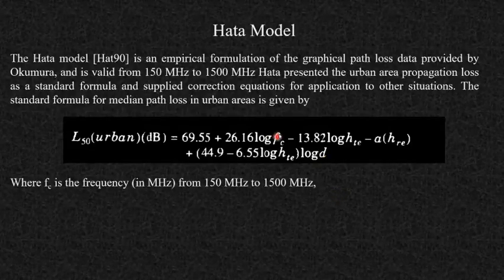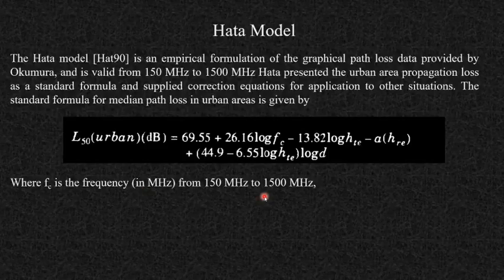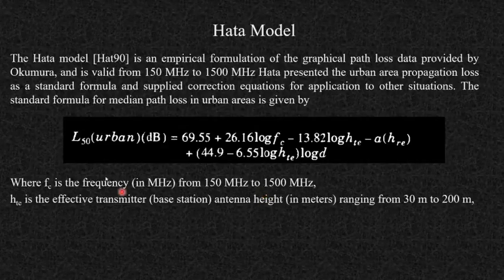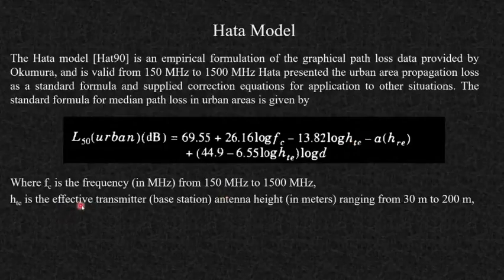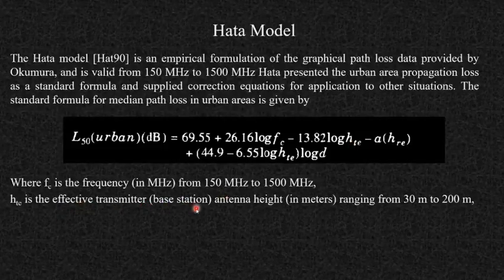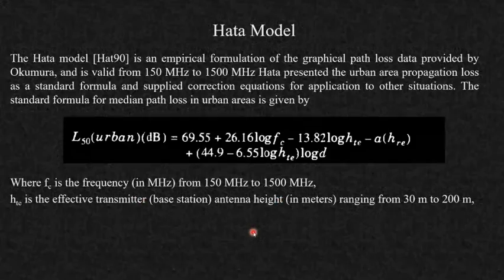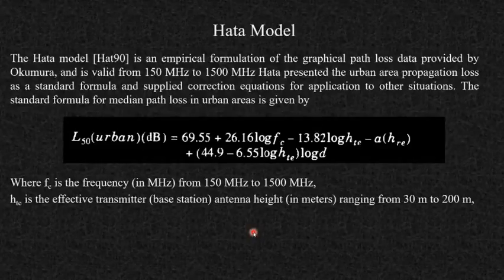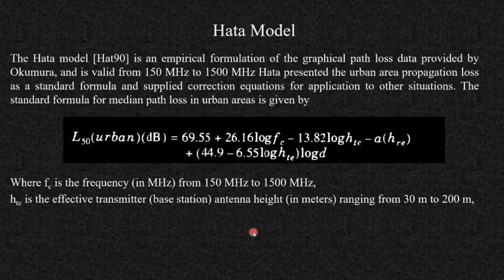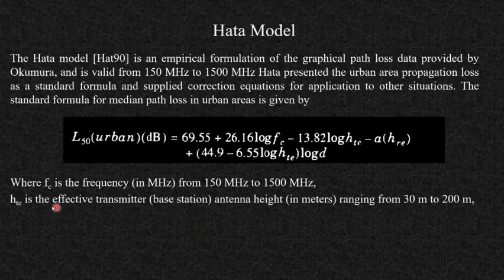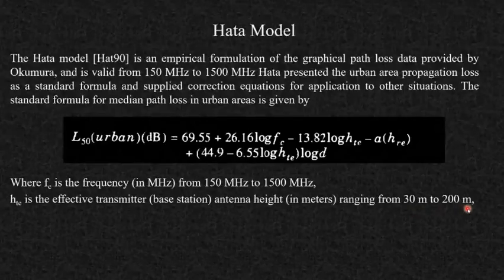Fc is the carrier frequency in megahertz, and this model is applicable only for 150 MHz to 1500 MHz. Hte is the effective transmitter — that is, base station — antenna height, ranging from 30 meters to 200 meters. This is the effective height, not the total height; only the height that actually contributes to transmitting power is counted.